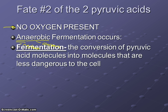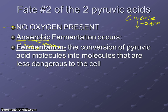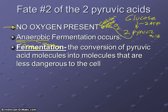Here's the definition of fermentation: we take those two pyruvic acid molecules from glycolysis and convert them into molecules that are less dangerous to the cell. Those pyruvic acids and some of the other things produced can't really exist in the cell without causing damage, so fermentation makes them into safer compounds. Remember, we start with glucose, make two net ATP through glycolysis, and end up with two molecules of pyruvic acid. If there is oxygen, we do cellular respiration. If there's no oxygen, we do fermentation — also called anaerobic fermentation.